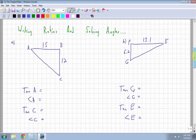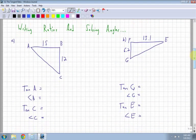Alright. Rating ratios and solving angles. This is probably the most confusing part that I've seen. It's not that confusing, but it just seems like students get mixed up with when do I rate the ratio and when do I rate the angle?